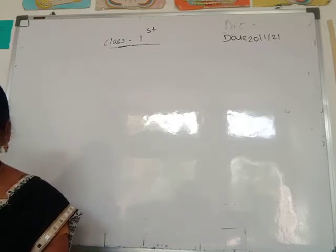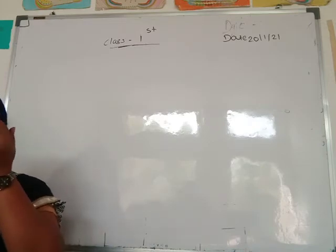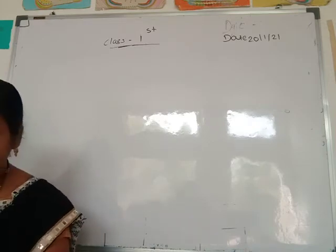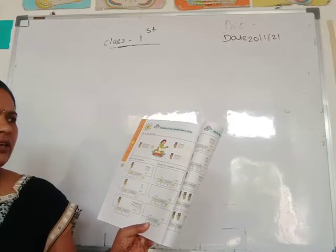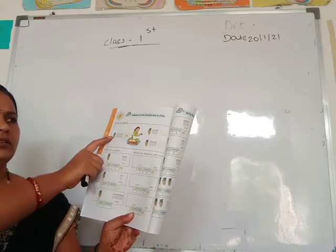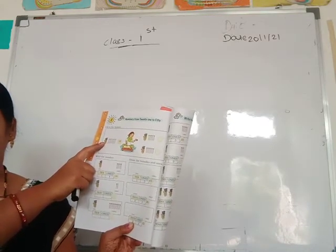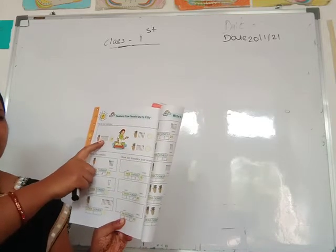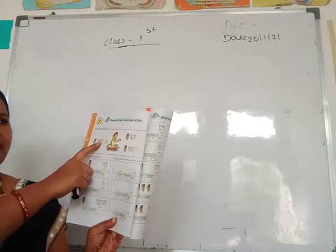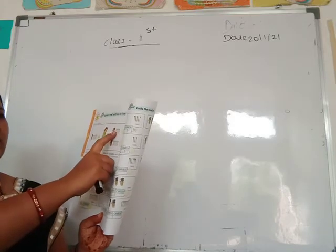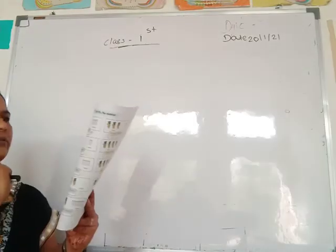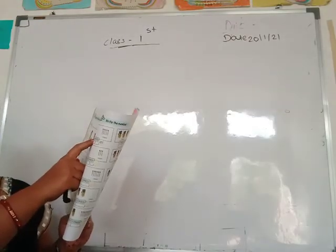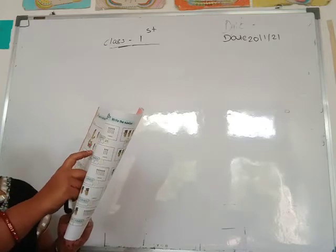Numbers from 21 to 50. See these numbers: 18 means here 10 — 10 sticks in one bundle — and separately 8 sticks. Here 1, 2, 3, 4, 5 and 5: 1 bundle of 10 and here 5, means 15. Then here 1 bundle of 10 and 1, 2, 3, 4, 5, 6 — means number is 16.